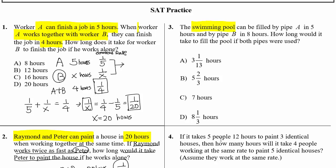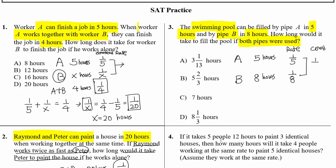Practice number three: A swimming pool can be filled by pipe A in 5 hours and pipe B in 8 hours. How long would it take to fill the pool if both pipes are used? From the time, find the rate: rate of A is one-fifth, rate of B is one-eighth. Since both pipes are open, we add them: combined rate equals one-fifth plus one-eighth equals 13 over 40.